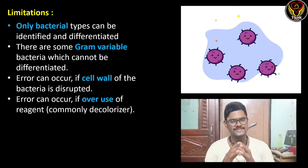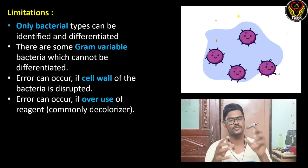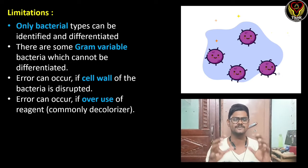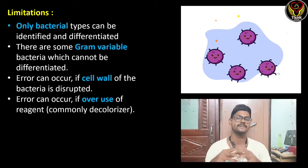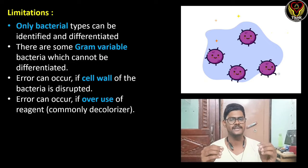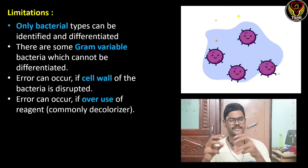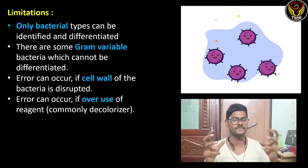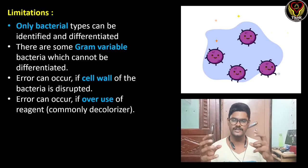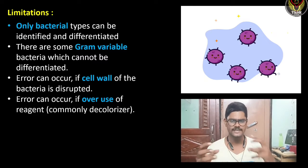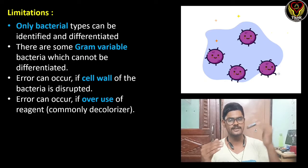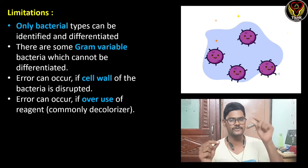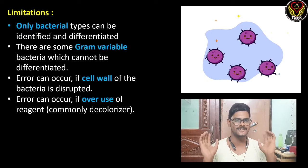Coming to the limitations, gram staining is only for bacterial staining — we cannot stain fungi, yeast, protozoa, or other organisms. Even among bacteria, some like Mycoplasma or Mycobacteria cannot be properly stained by gram staining; for these we use another technique called acid-fast staining. Lastly, over-use or under-use of reagents may also influence the result, so we have to be very careful.